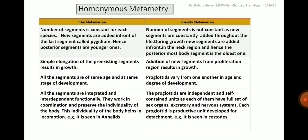Here in this table, some of the differences between true metamerism and pseudometamerism are presented. In true metamerism, the number of segments is constant for each species. New segments are added in front of the last segment, hence posterior segments are the younger ones. While in the case of pseudometamerism, the number of segments is not constant as new segments are constantly added throughout life. During growth, new segments are added in front, in the neck region, which is the proliferative region, and hence the posteriormost body segment is the oldest one.